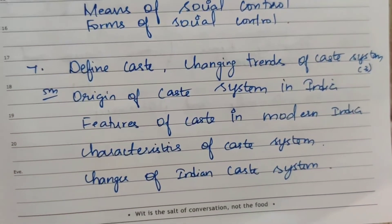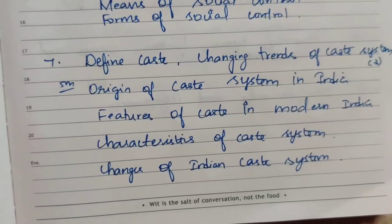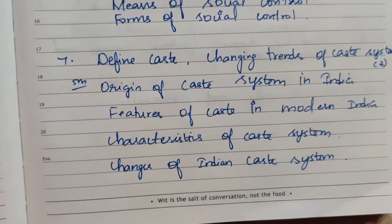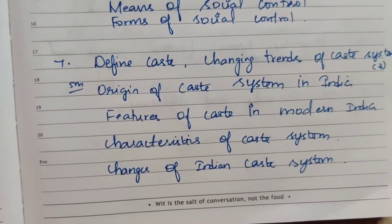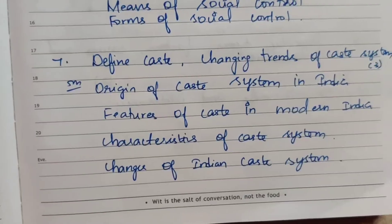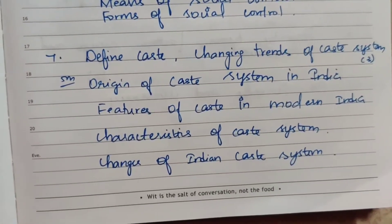Seventh question: Origin of caste system in India, features of caste in modern India, characteristics of caste system, and changes of the Indian caste system — all asked about three times for 5 marks each.